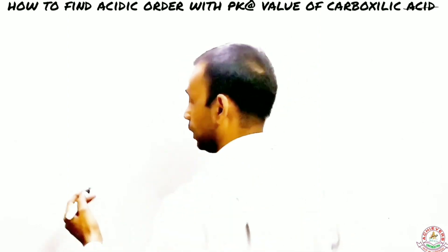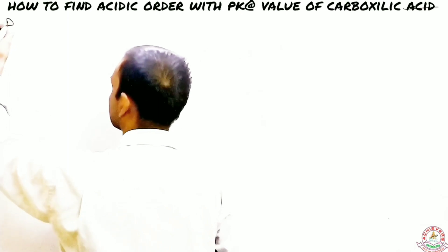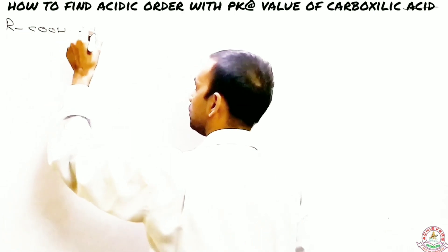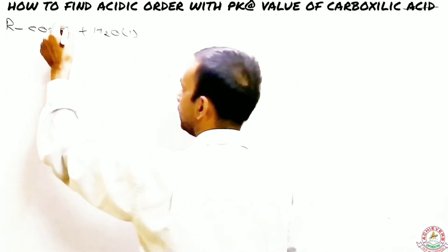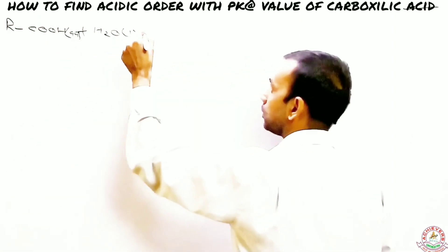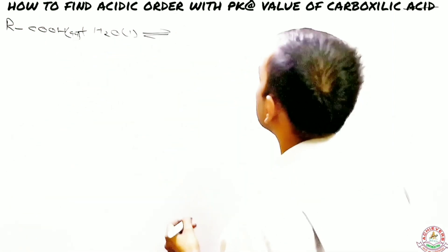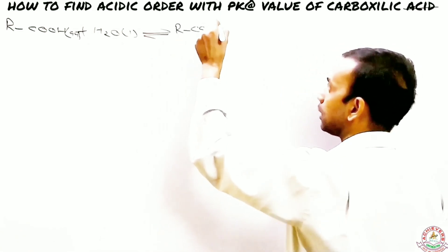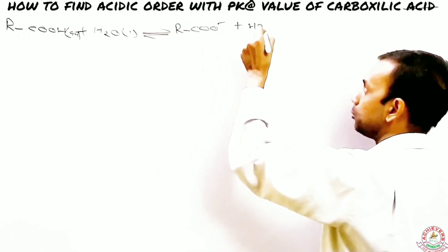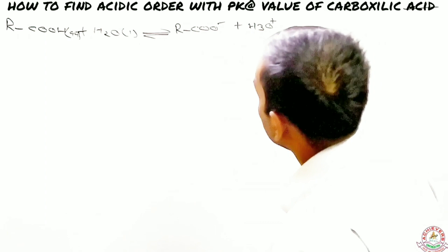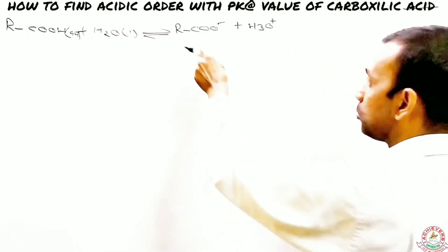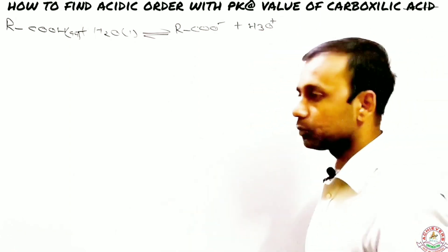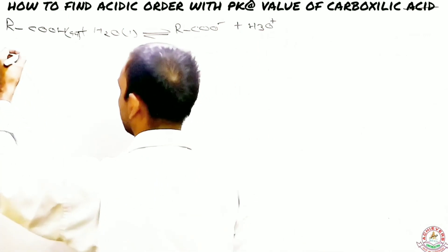Starting with the relationship between acidic strength and pKa — when a carboxylic acid is mixed with water, it converts into ions. It produces a carboxylate anion along with a hydronium ion. The carboxylate anion is highly stable, and that's why carboxylic acids are stronger acids.